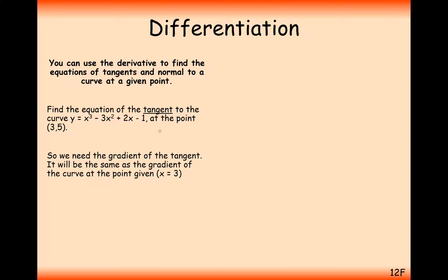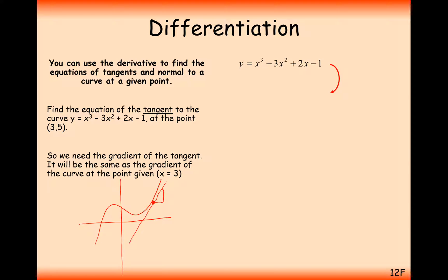The first thing we need to do is find the gradient at the point where x equals 3. For this cubic function, we want to find what the gradient at this point is going to be, so that we know the gradient of the tangent. To work out the gradient, we differentiate — that is why we differentiate, to find gradients of curved lines. The differential is going to be 3x squared minus 6x plus 2.